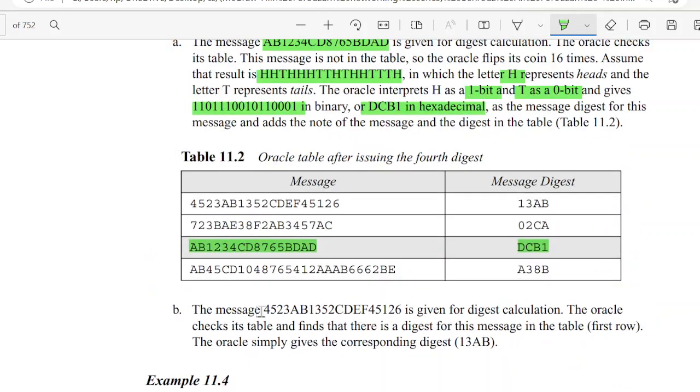The other example is when a message is given to the model, it checks whether the message is present. The message is already present, so it gives the message digest and records the message and the digest.